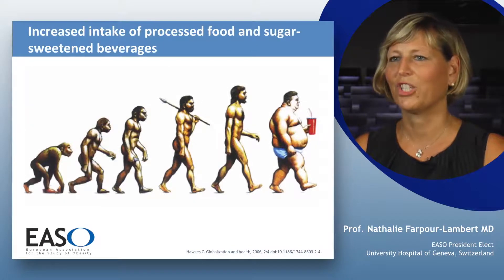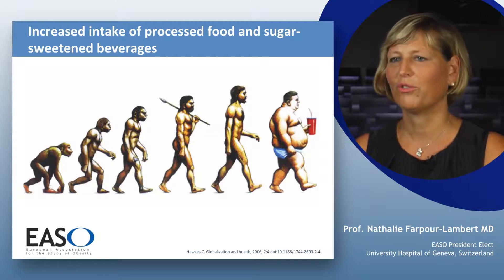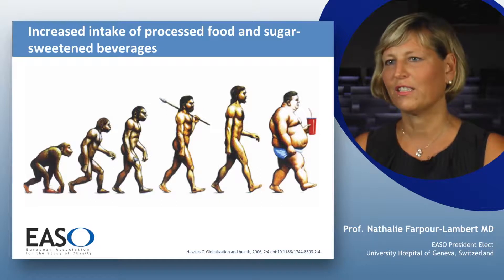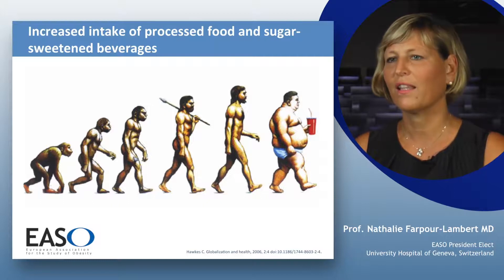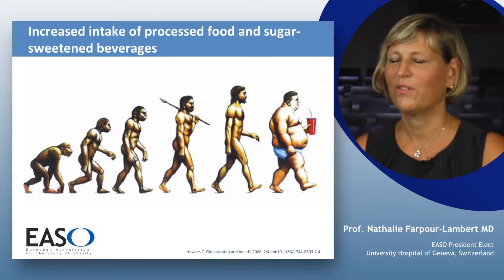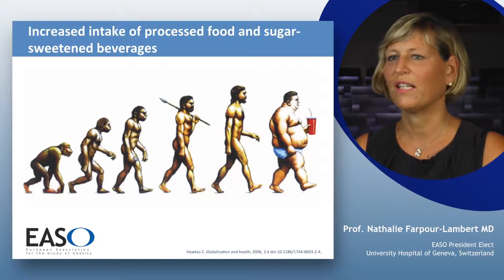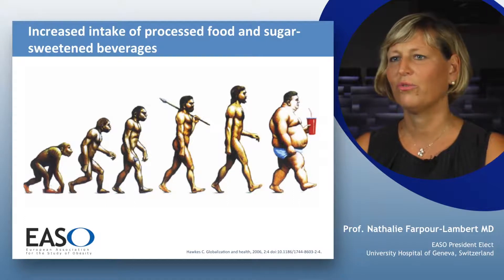Nutritional habits have changed dramatically in the past decades. The food industry is now producing more products including added sugar, saturated fat, as well as salt. The sugar-sweetened beverages production is also increasing and more and more children are drinking them instead of drinking water. One of the solutions to prevent childhood obesity is to improve the content of the products, improve the labeling, as well as reducing the promotion of unhealthy food to young children.